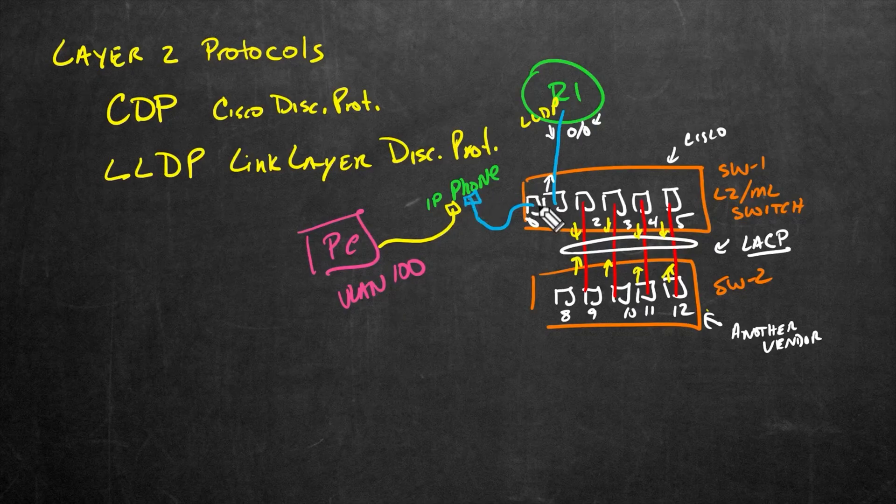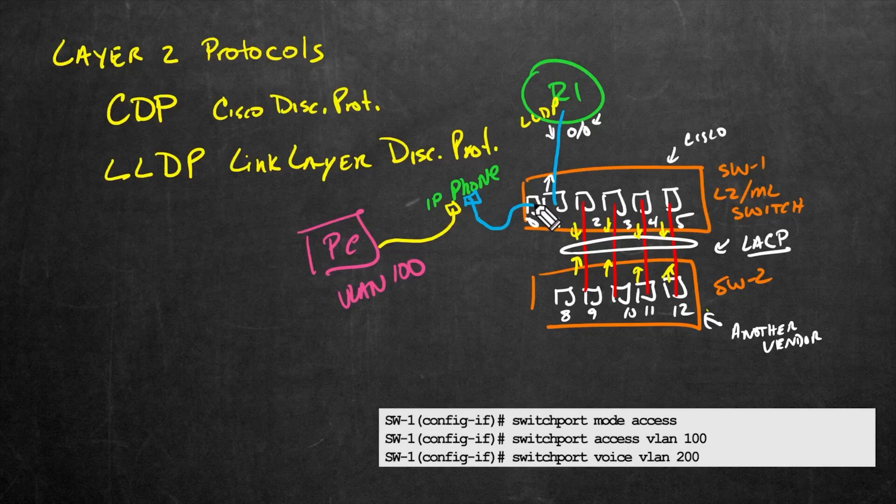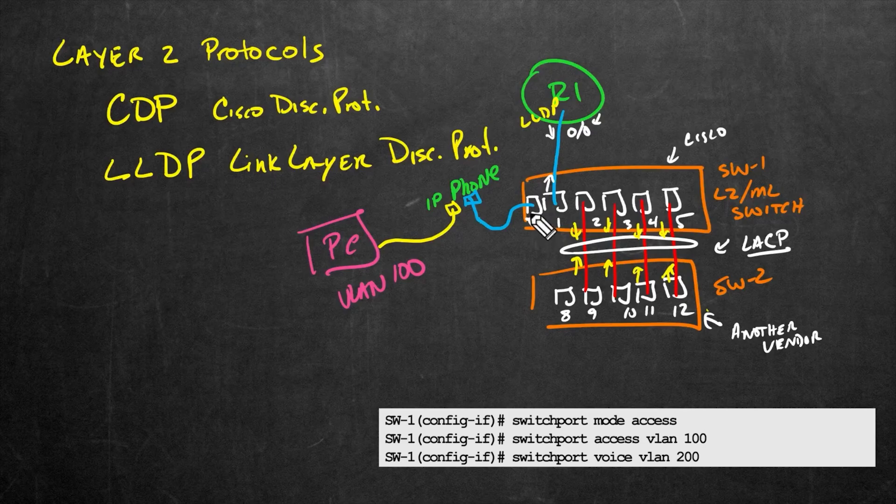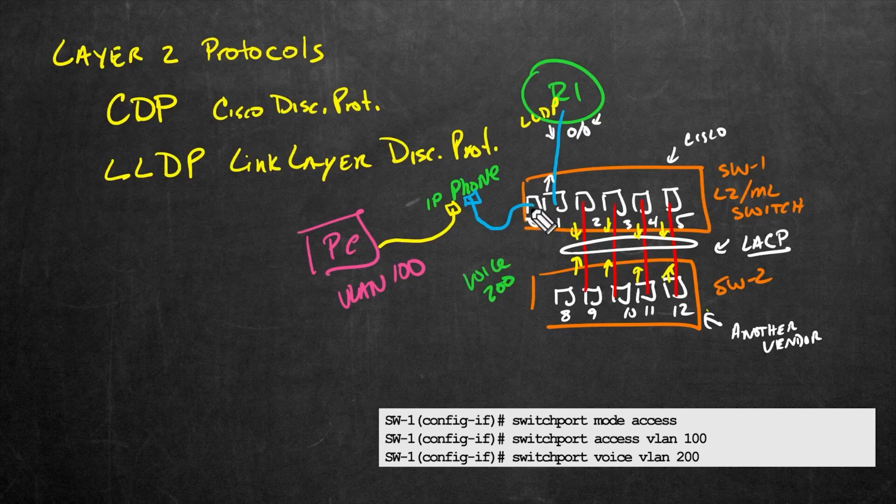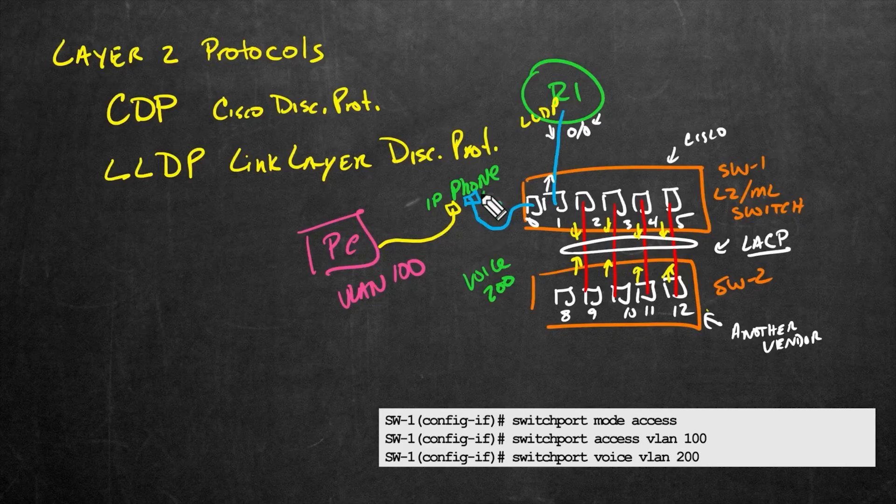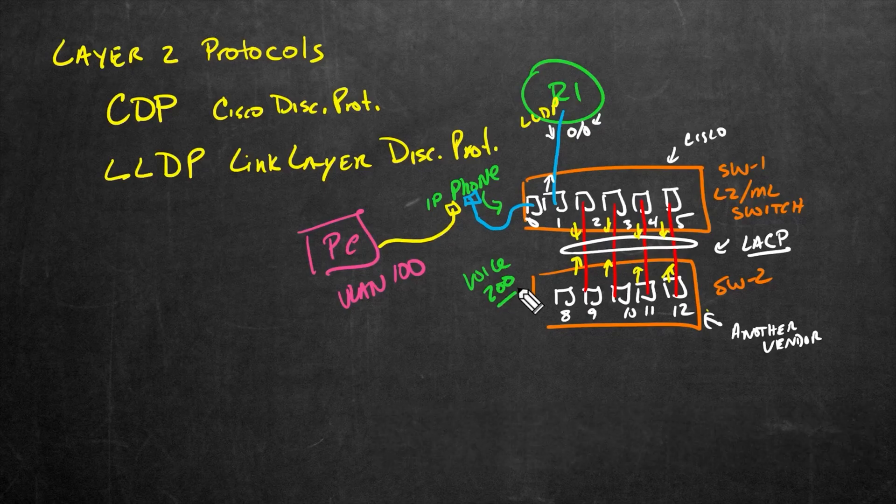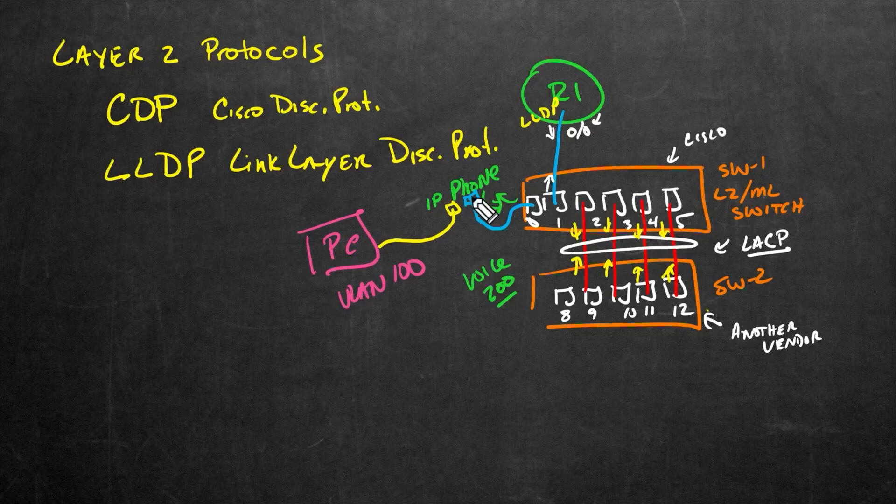So this port right here, port zero, still configured as an access port in VLAN 100. But we also added to the config to this port, we also said switchport voice VLAN. And let's say we want to use the VLAN of 200 for a voice VLAN. So even though it's still an access port, we now have added on top of it, the voice VLAN. So the phone, when it sends its traffic into the switch, it's going to use the 802.1Q tag of 200.